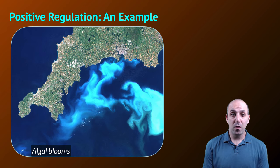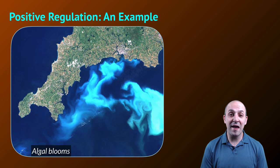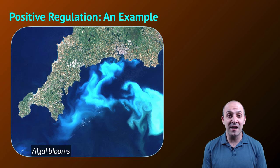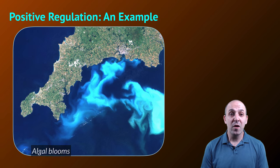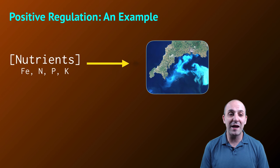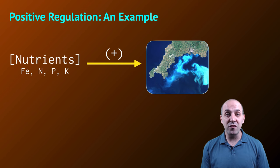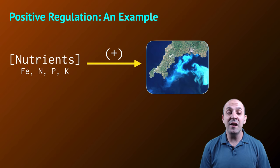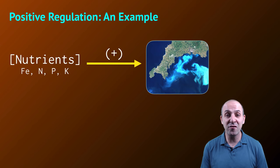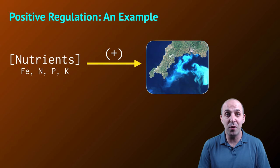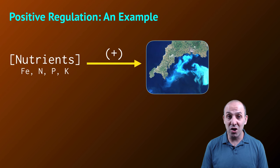Let's look at one specific example: algal blooms. What you see in this photo is a satellite picture taken off the European coast — you can see the algal bloom from space. It's a massive, temporary increase in the amount of phytoplankton in the water. Algal blooms are caused by increases in specific nutrients added to the water — specifically iron, nitrogen, phosphorus, and potassium. The presence of increased amounts of these nutrients up-regulates the growth of these algae, leading to this example of positive regulation. This is not a benefit to the ecosystem; certain algal blooms can be toxic to all other life in the area. Positive doesn't mean good, it just means more.